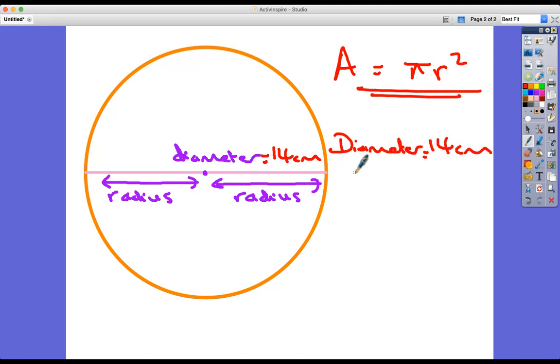Then therefore the radius - I can't write all of a sudden, let's try that again - therefore the radius is half of that, 14 divided by two, is seven. There's my key. So R is seven.